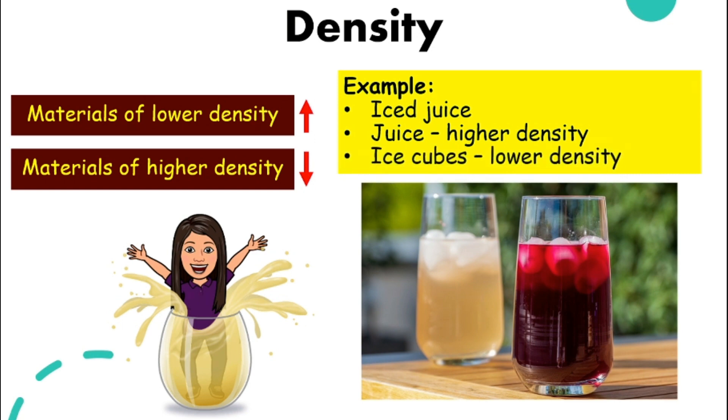This is because juice has higher density compared to ice cubes. So ice cubes will float and the juice will be at the bottom. So that is the whole concept of density. If the number is higher, if it is more dense, it will always be at the bottom. Compared to another material, if the number is smaller, meaning if it is less dense or if it is of lower density, then it will be on top.